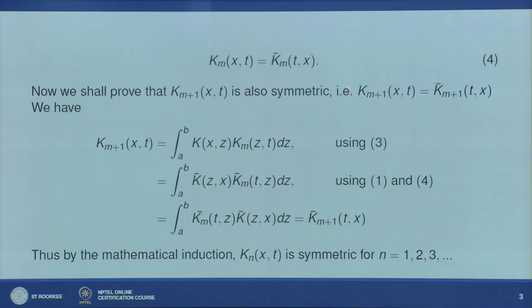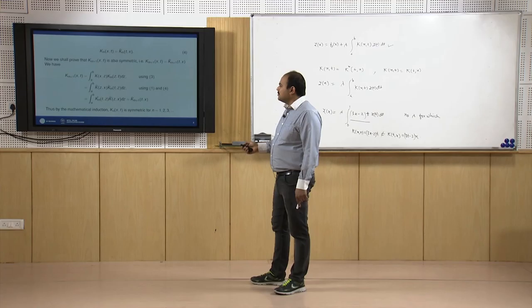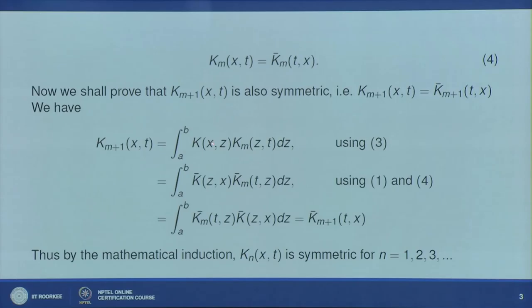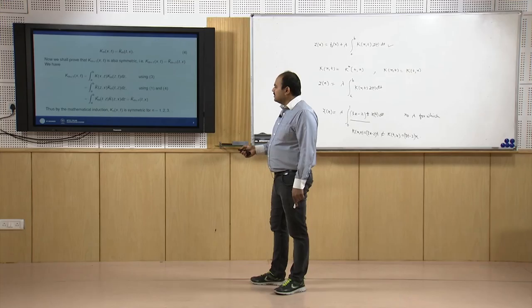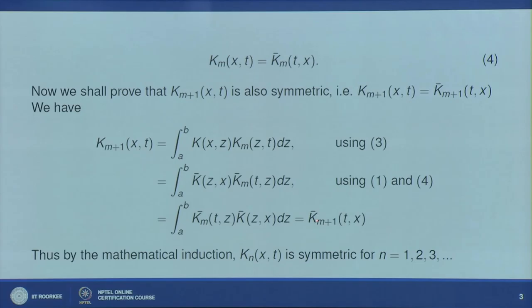We assume k_m(x,t) = k̄_m(t,x), and we want to prove k_{m+1}(x,t) = k̄_{m+1}(t,x). By definition, k_{m+1}(x,t) = ∫[a to b] k(x,z) k_m(z,t) dz. Since k(x,z) is symmetric, we write it as k̄(z,x), and k_m(z,t) = k̄_m(t,z). Rearranging, this is the complex conjugate of k_{m+1}(t,x).